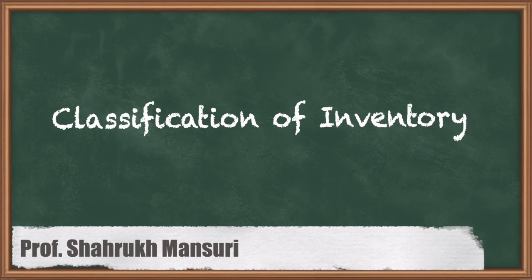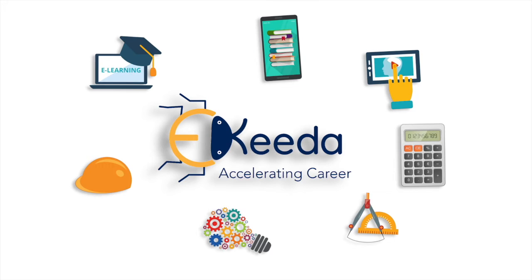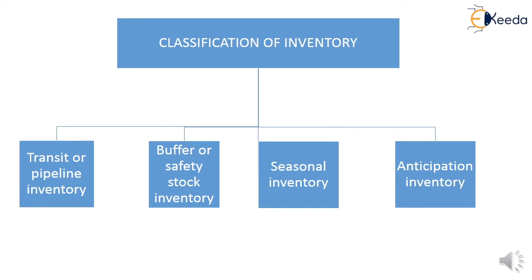Hello everyone, welcome to all subjects. Industrial Engineering, Chapter: Inventory Control, Topic: Classification of Inventory. Today we are going to discuss classification of inventory. The inventory is classified into four categories: first is transit or pipeline inventory, second is buffer or safety stock inventory, third is seasonal inventory, and fourth is anticipation inventory.